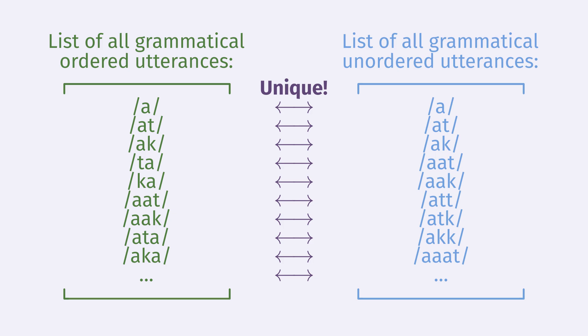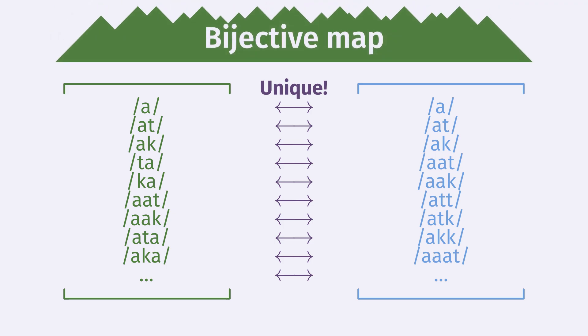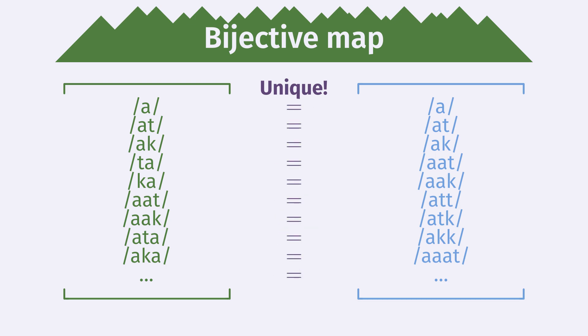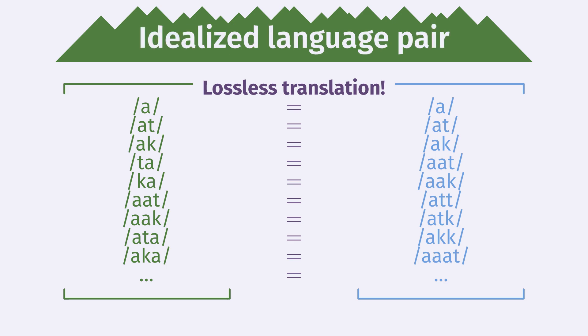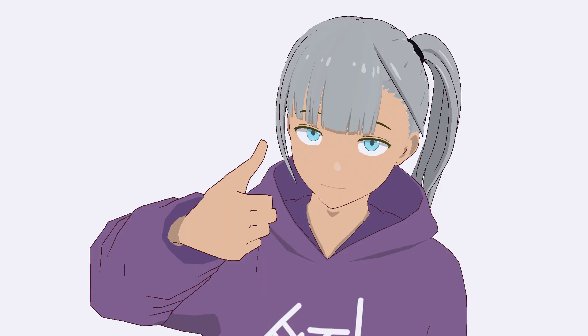A mapping with this property is called a bijective map. With a bijective map, if we make it so that each unordered utterance has the same meaning as the ordered utterance it maps to, then we can losslessly translate anything from one language to the other. We call a pair of languages with this idealized translation scheme an idealized language pair. Thus, we have proven that for each ordered language, we can construct an unordered language that can convey exactly the same information — so yes, unordered languages are in fact possible.